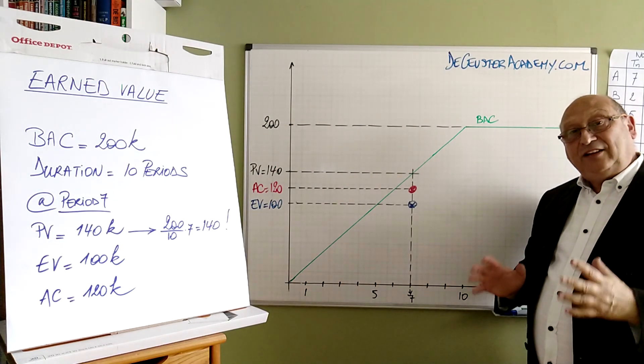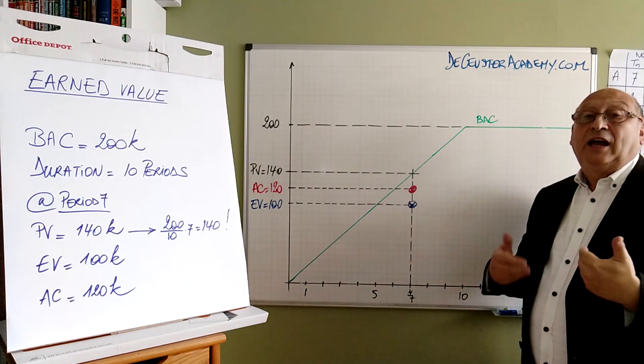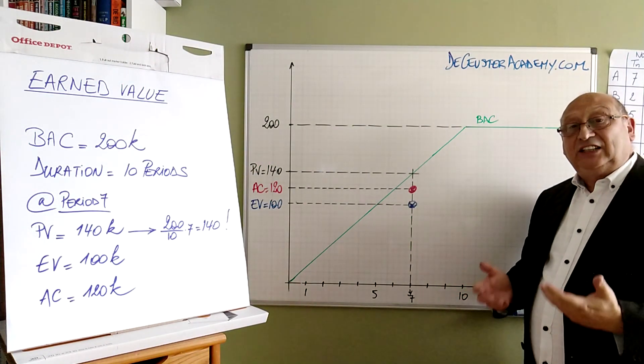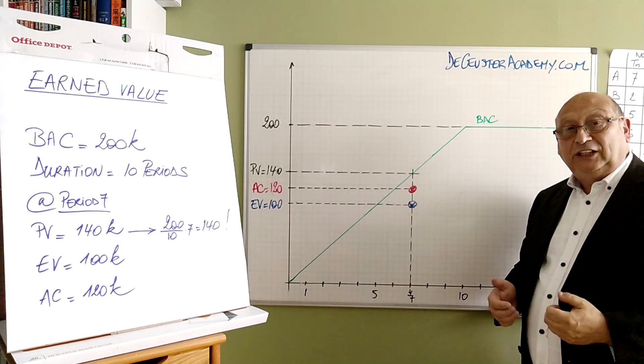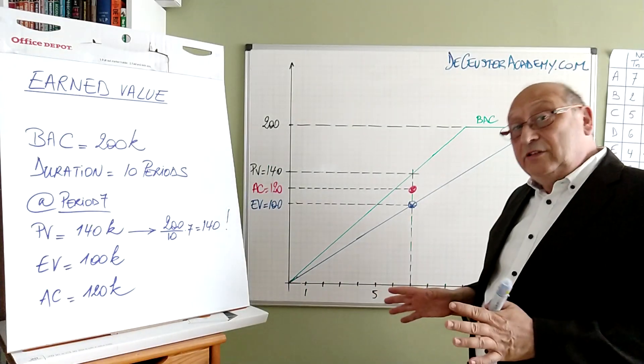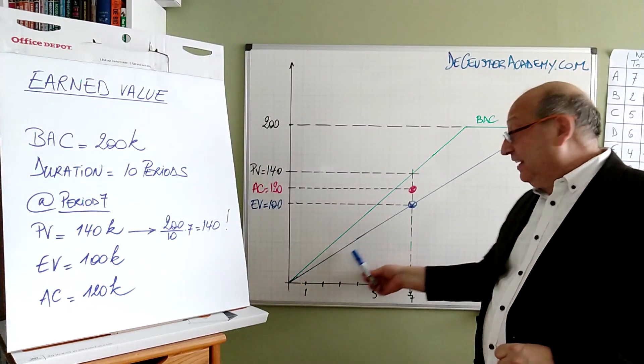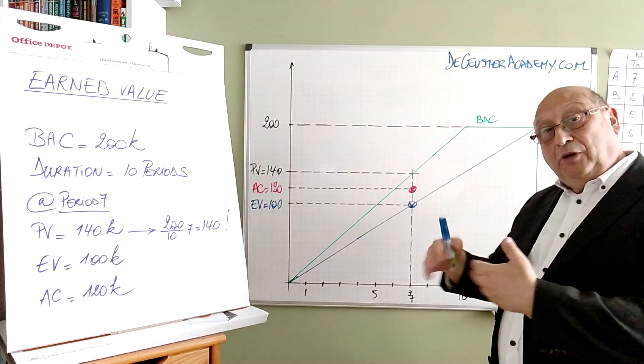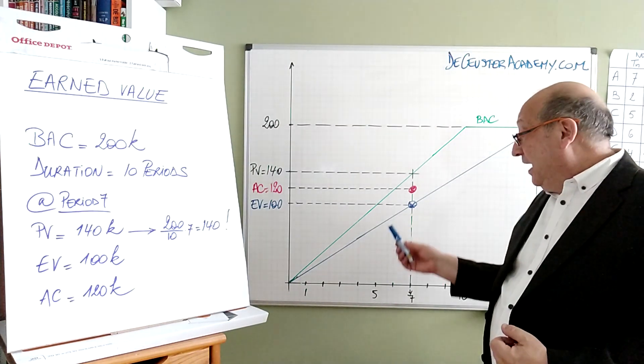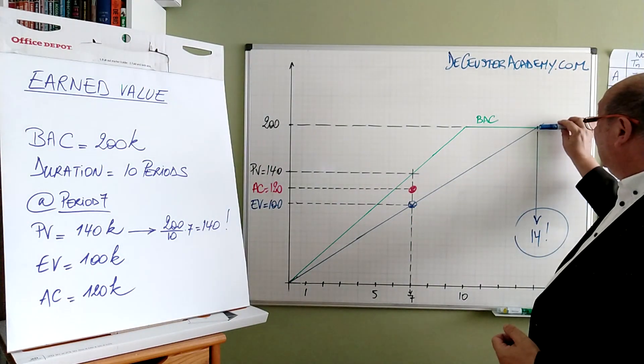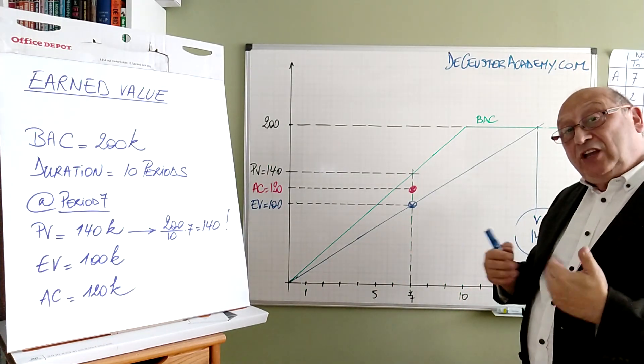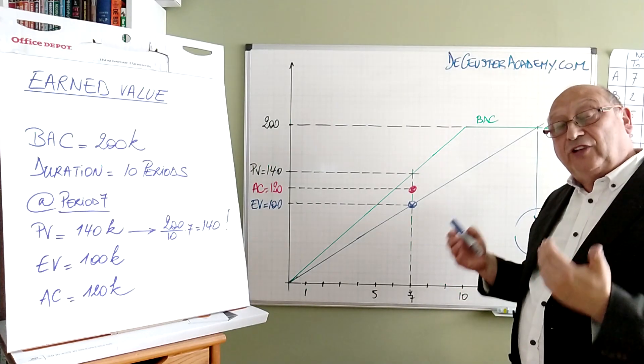The next step is to find out what is the expected end date of the project using this method, and secondly, what is the expected budget at completion or the EAC, estimate at completion. What I did now is that I extended this trend of how much we spend over time or how many deliverables we create over time. I extended it till I intersect the BAC value, the budget at completion, because we continue working until all the deliverables are finished.